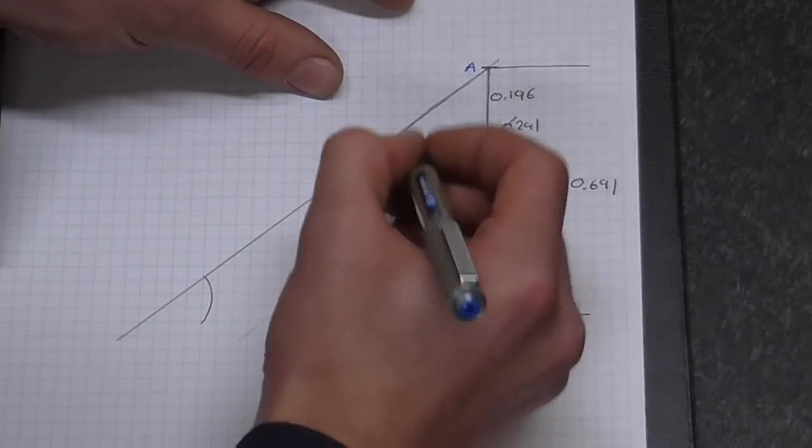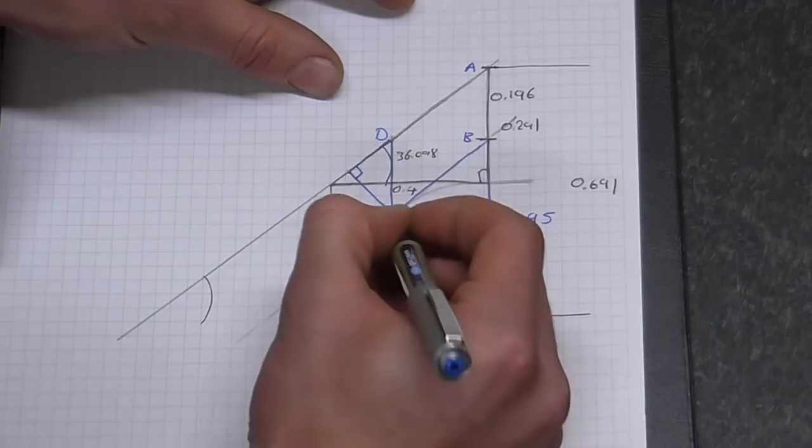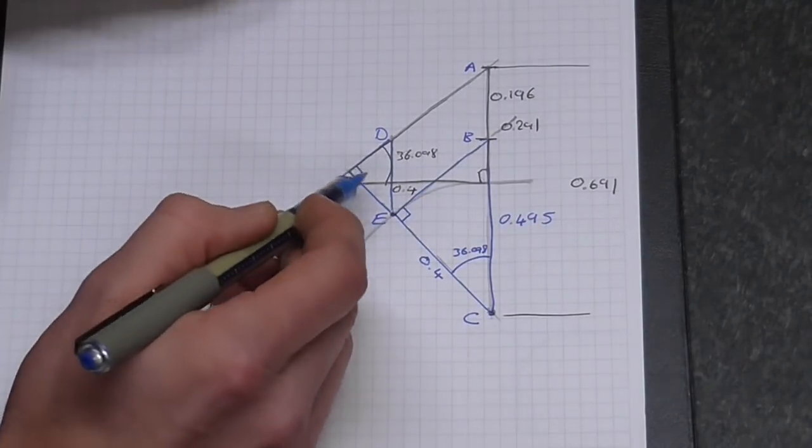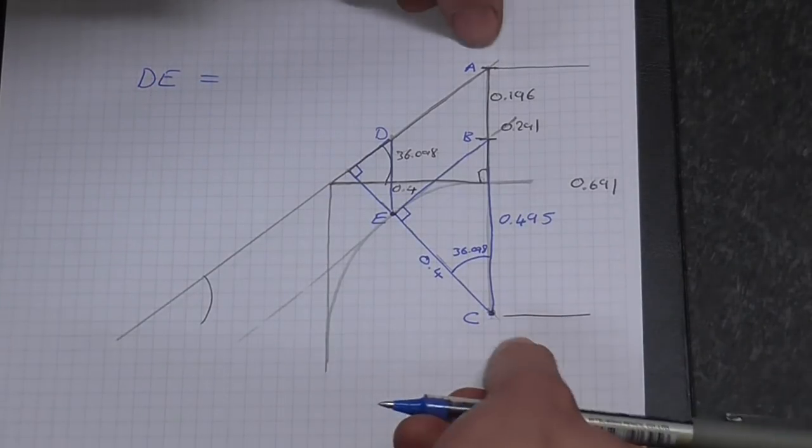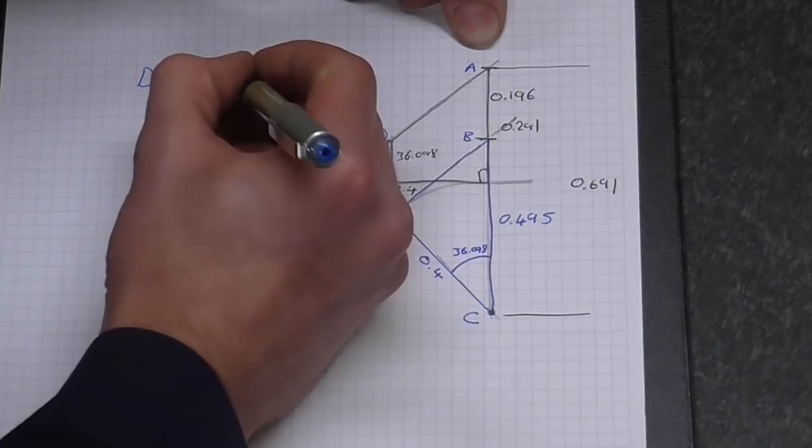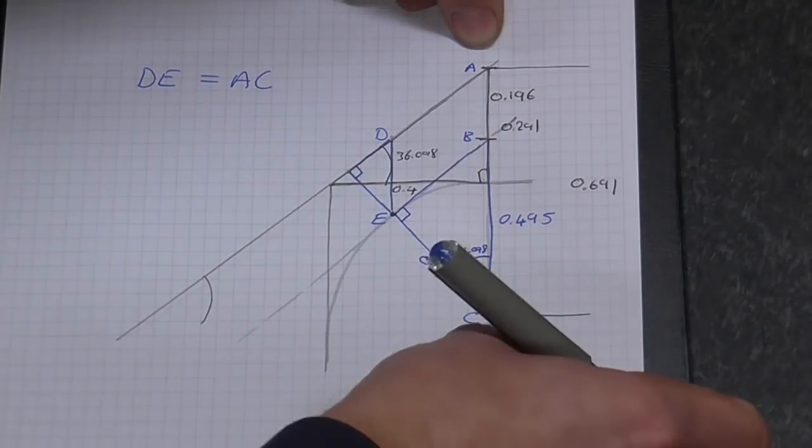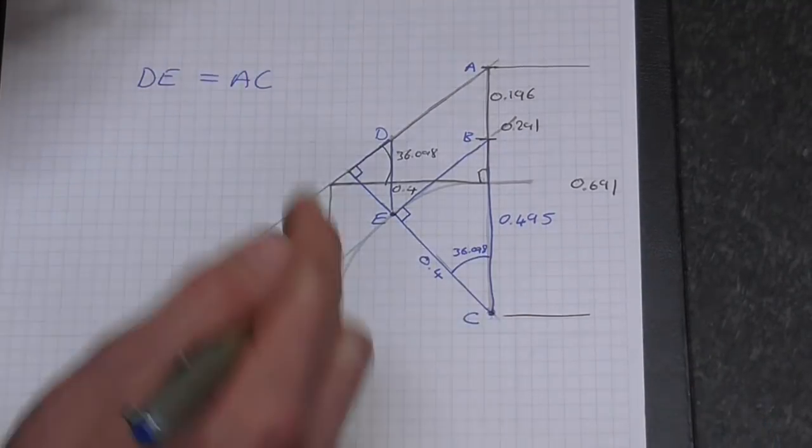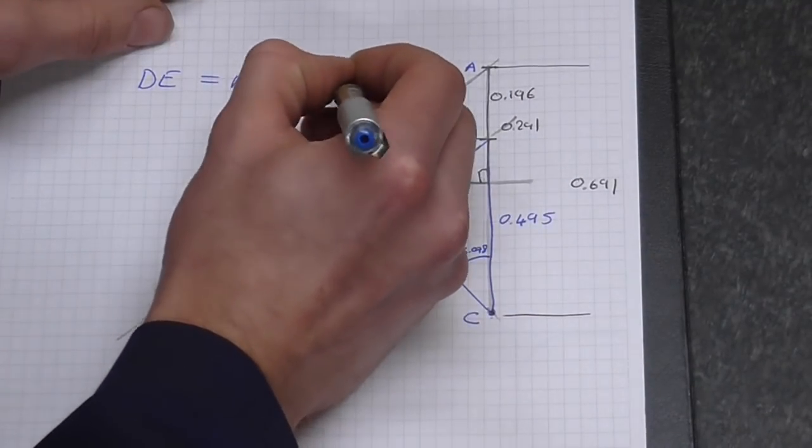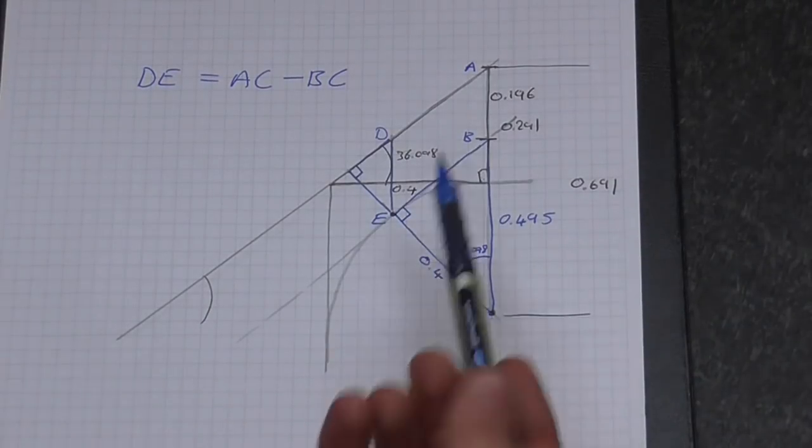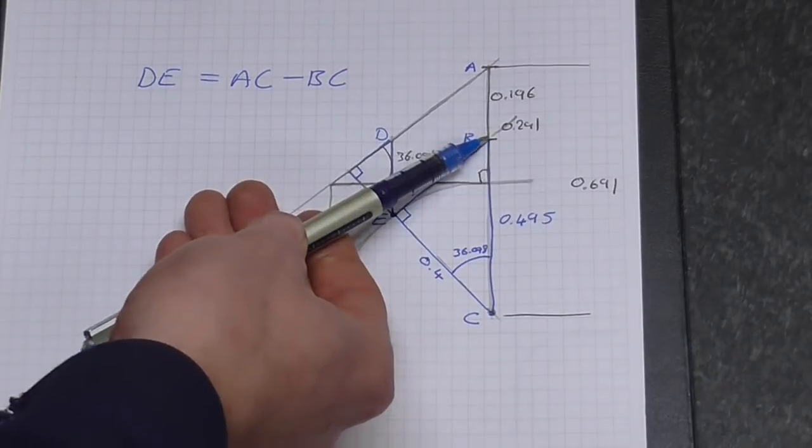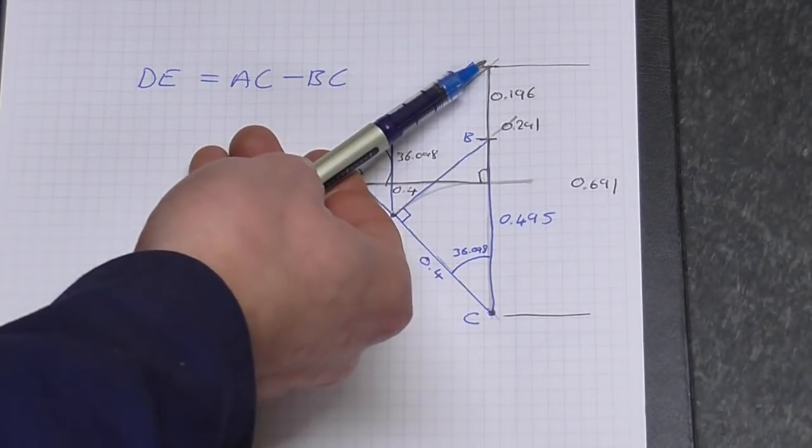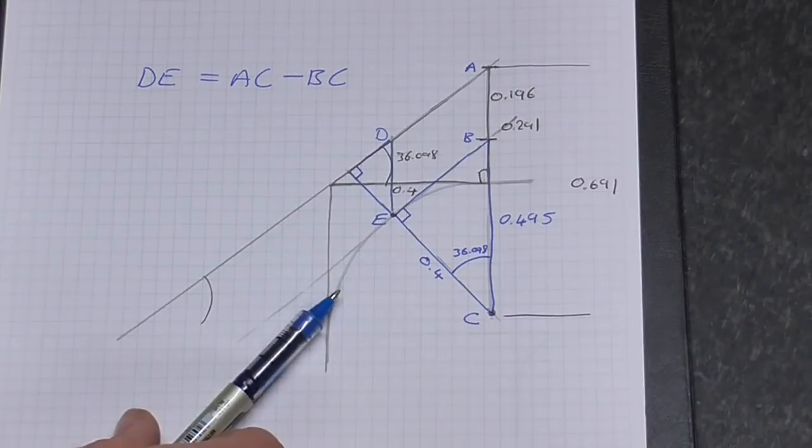So to write this out in some kind of formula, we can say that the size we need to find DE is equal to AC minus BC. And if you're interested in formulas that may be helpful. So that's how I've done it. That's how I've arrived at the calculated infeed required. And hopefully that made some sense.